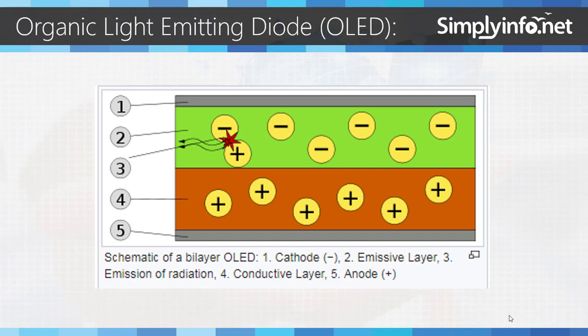Here is a schematic of a bilayer OLED. 1. Cathode with minus symbol. 2. Emissive layer. 3. Emission of radiation. 4. Conductive layer. 5. Anode with plus symbol.